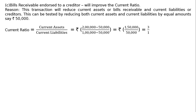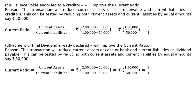Part D: Payment of a final dividend already declared. An already declared dividend is a current liability. Paying it will improve the current ratio. Reason: this reduces current assets (cash/bank) and current liabilities (dividend payable) equally. Current ratio = (Rs. 2 lakh − Rs. 50,000) / (Rs. 1 lakh − Rs. 50,000) = Rs. 1,50,000 / Rs. 50,000 = 3:1.